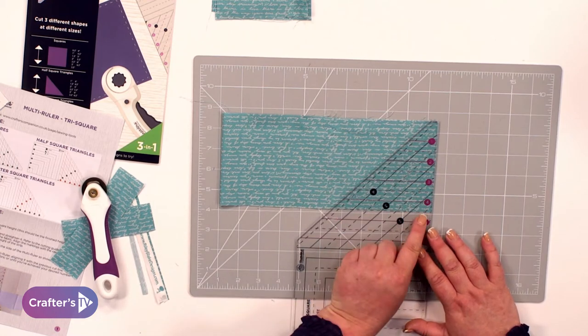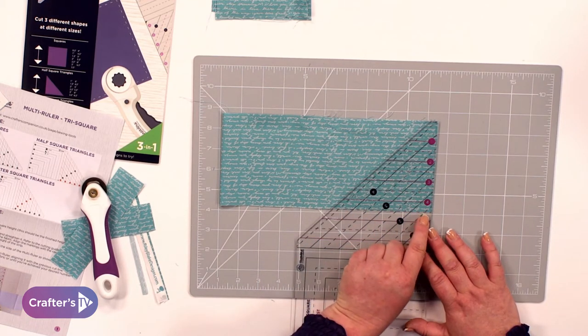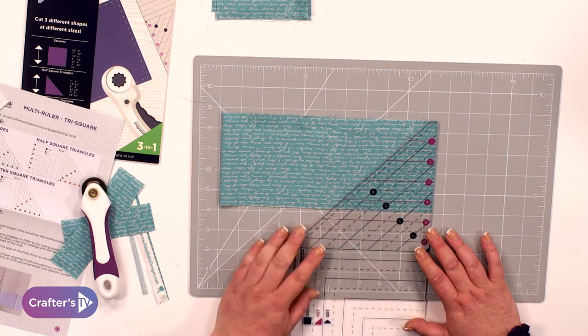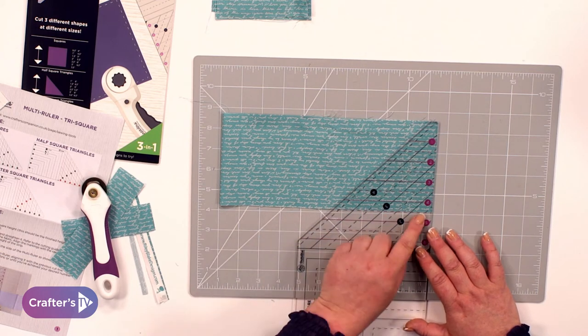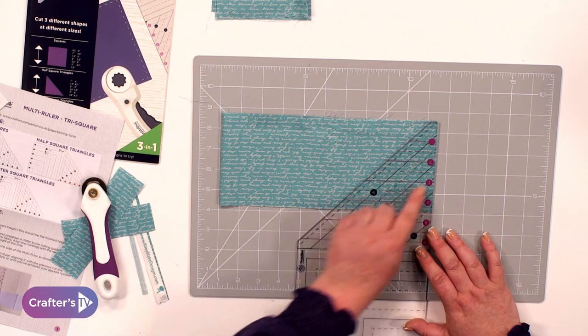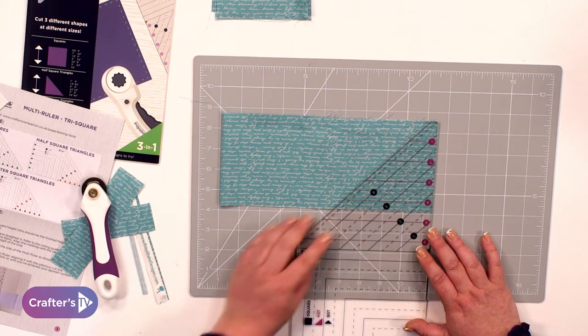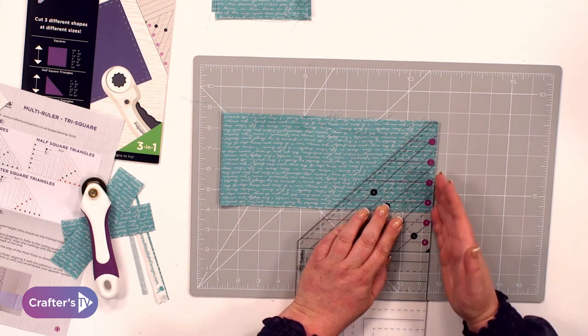And then you're going to find the line that you're going to work from. So again, I'm going to look for that four and a half inch line. So it's the dashed line here and I'm lining that up along the bottom edge of my fabric. And then this edge that I've just cut, I'm lining that up along the edge here.